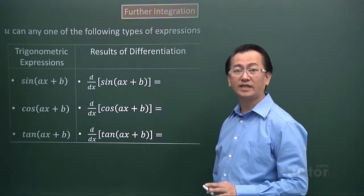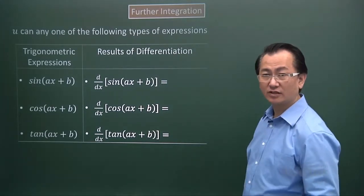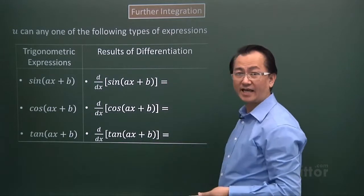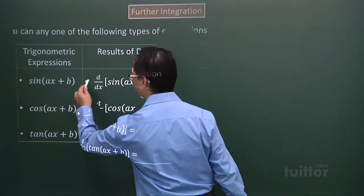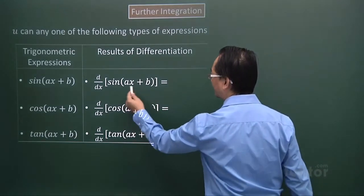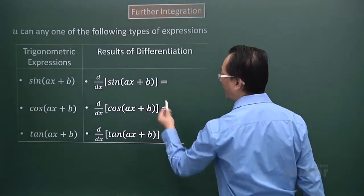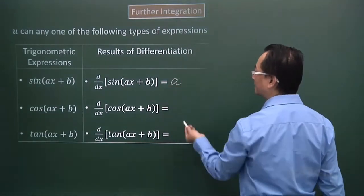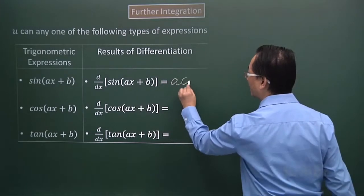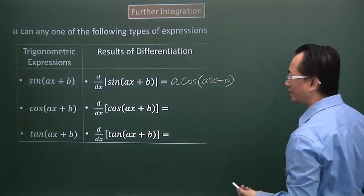We now look at all possible expressions for u. If u is a sine function, then it will be sin(ax + b), still in terms of x. Differentiating this, I consider the angular expression ax + b. Differentiating that gives a, and differentiating the sine function gives cosine. So the derivative is a·cos(ax + b), with the angle expression unchanged.